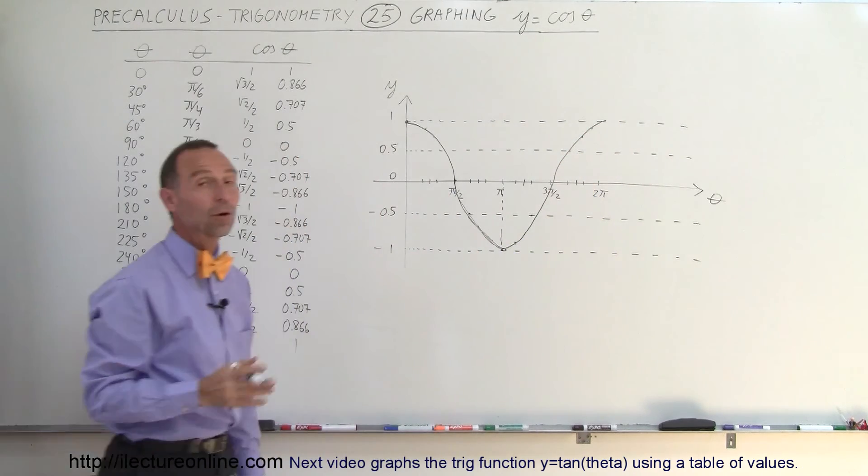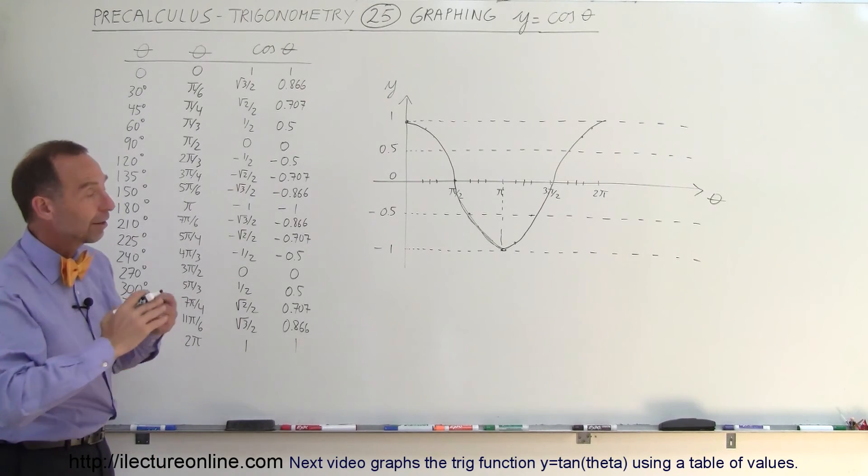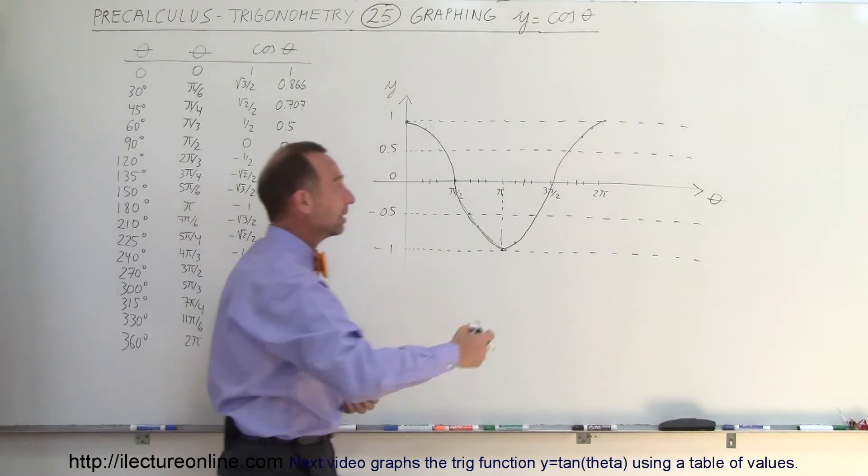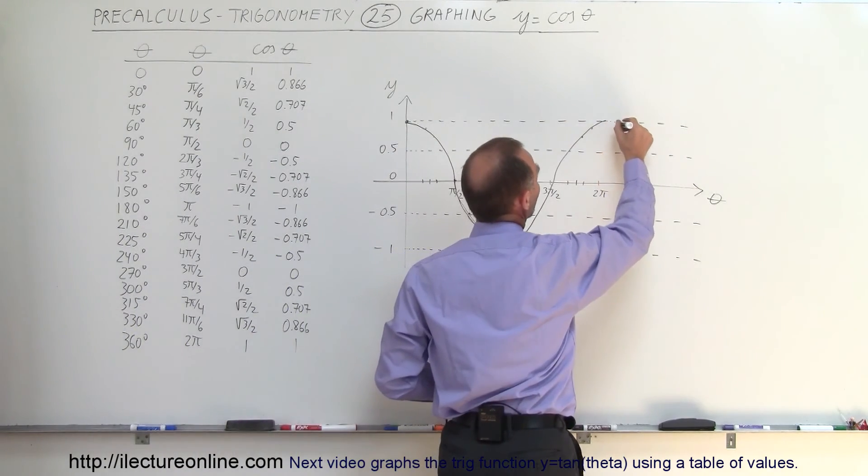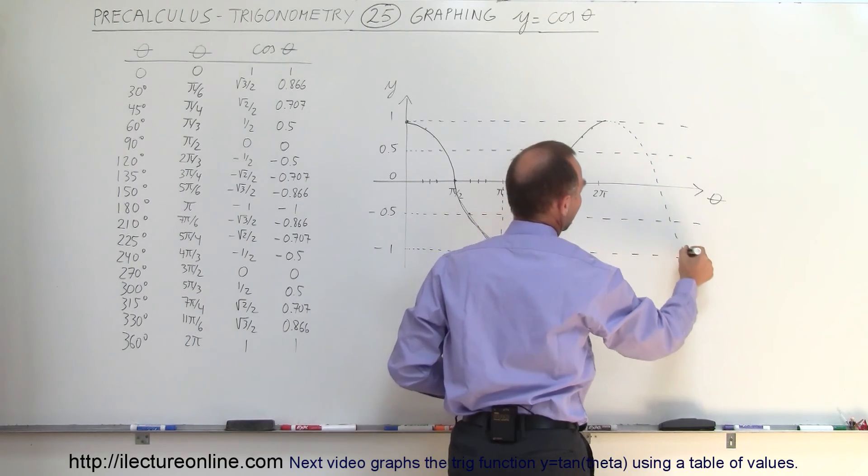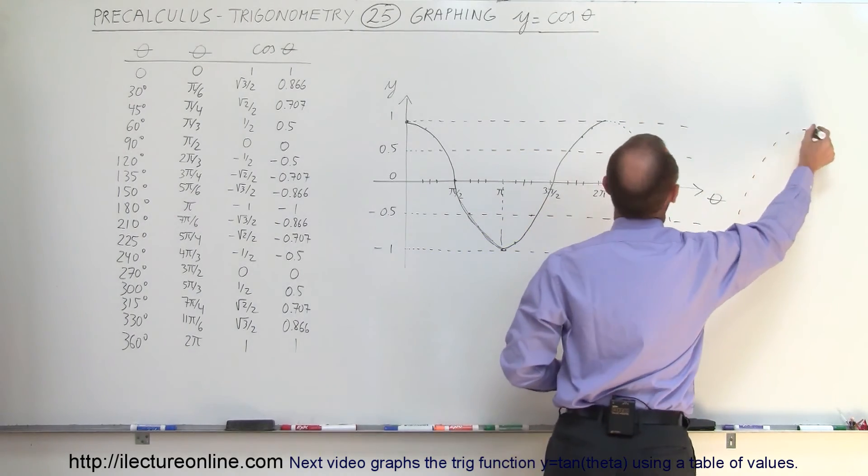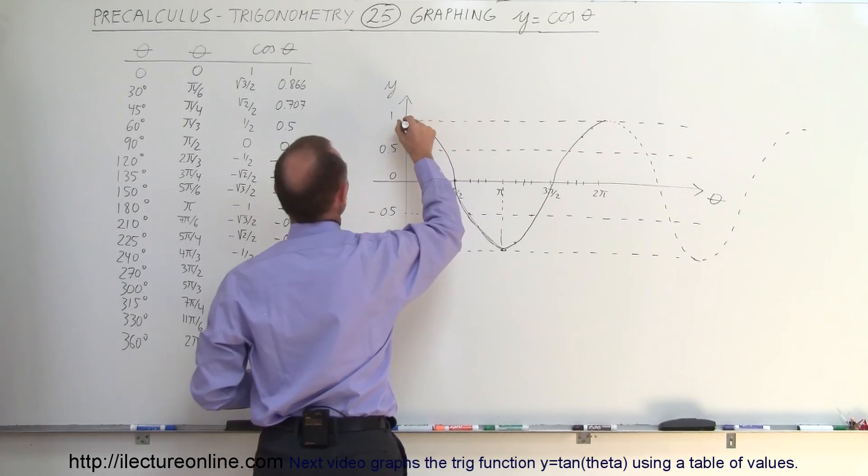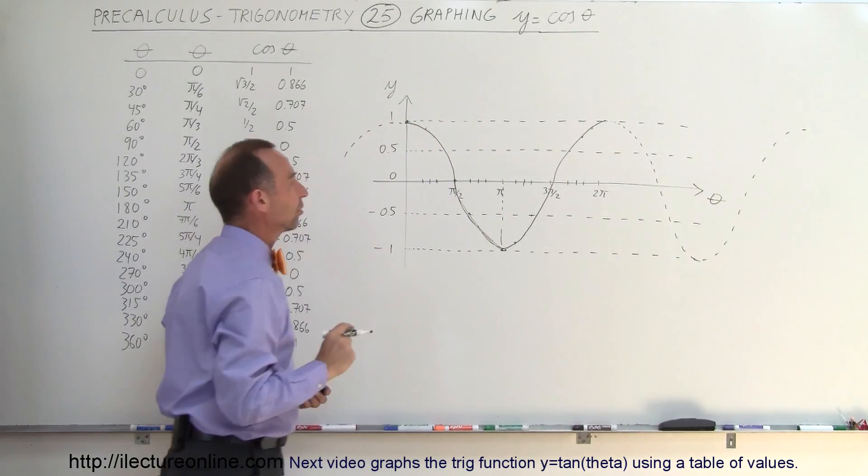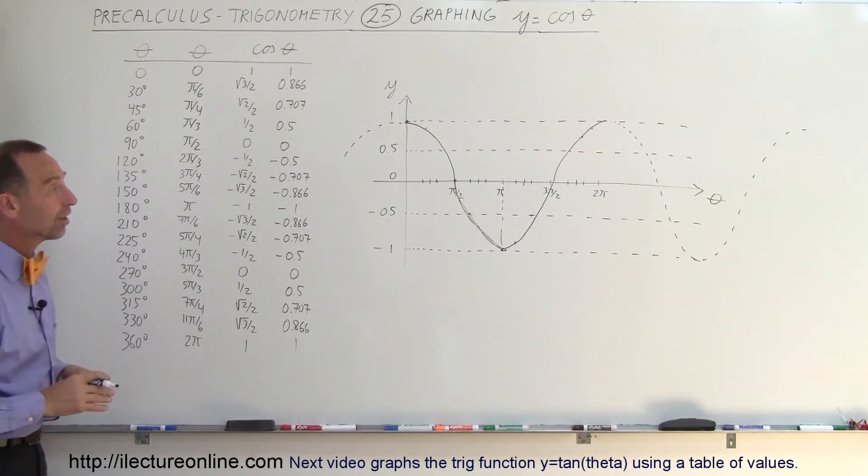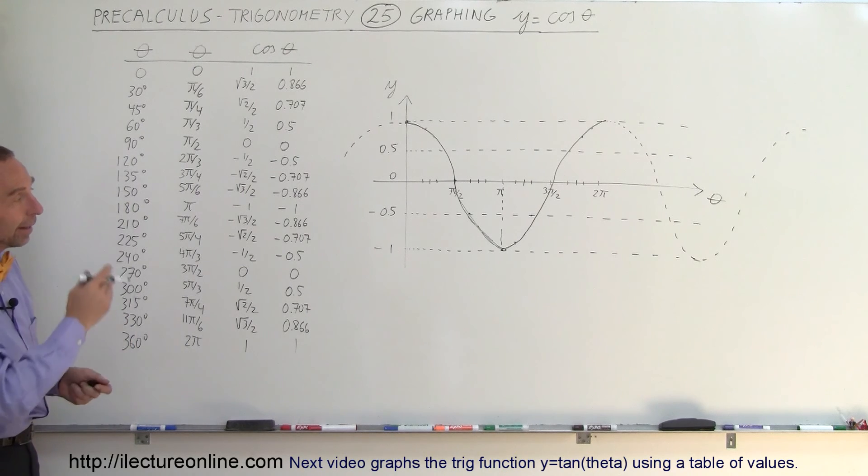And so that's what the cosine of the angle looks like. Of course, if we continue around the circle indefinitely, the function would just continue like this and go on like that in the negative direction as well. That's what the cosine of the angle looks like between 0 and 2 pi, and you can go ahead